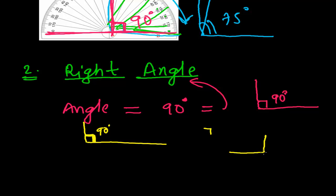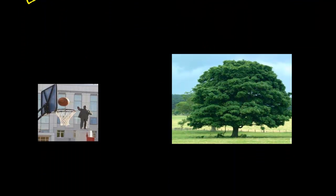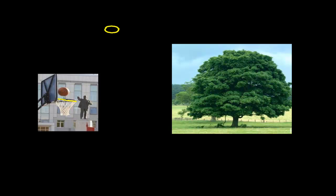A right angle can appear on any side — it may be like this side or that side — but it is always exactly 90 degrees. Now let me give some real-life examples of right angles. See this basketball hoop — the circular board and the straight pole together make exactly 90 degrees. That is another example of a right angle.